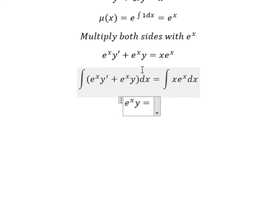So the result on the left should be e to the power of x multiplied by y. On the right, that's x multiplied by e to the power of x minus e to the power of x, and we have C. Then we divide both sides with e to the power of x.